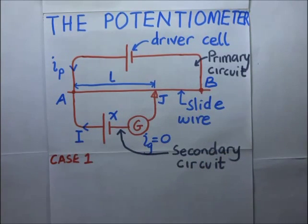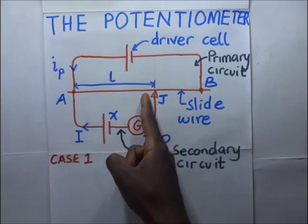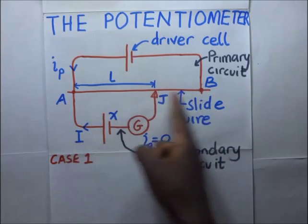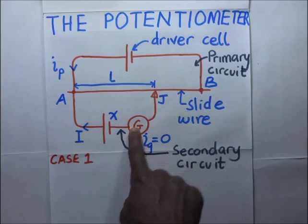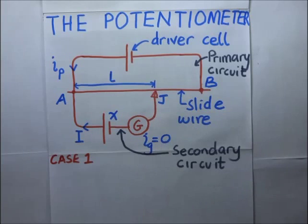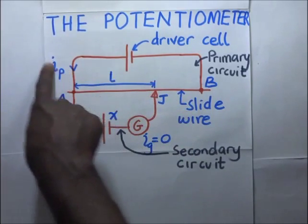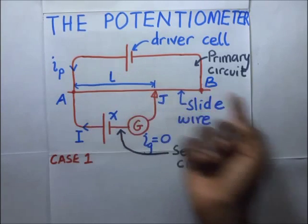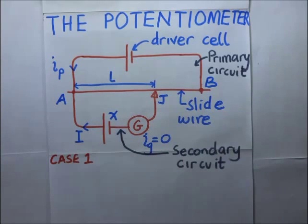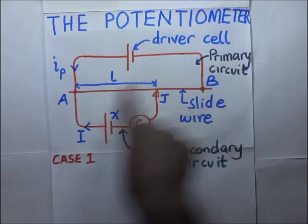In the secondary circuit we have a galvanometer with a sliding jockey J. This jockey is slid along the wire and the balance point is obtained when the galvanometer reading shows zero deflection, just like the balance condition for the Wheatstone bridge. The driver cell produces a primary current or driver current. There are some guidelines we follow when connecting this potentiometer — all higher potential terminals connect at point A, where the primary and secondary circuits meet.